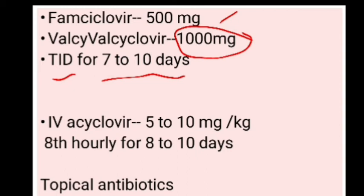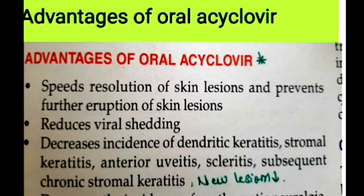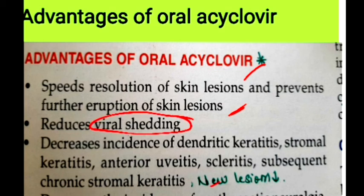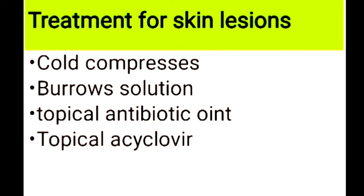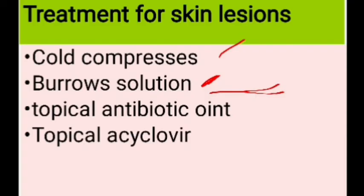For severely ill or immunocompromised patients, IV acyclovir is given at 5 to 10 mg/kg every 8 hours for 8 to 10 days, supplemented with topical antibiotic ointment or drops with warm compresses. The advantages of oral acyclovir include: it speeds resolution of skin lesions, prevents further eruption, reduces viral shedding, decreases incidence of ocular manifestations, and decreases post-herpetic neuralgia.